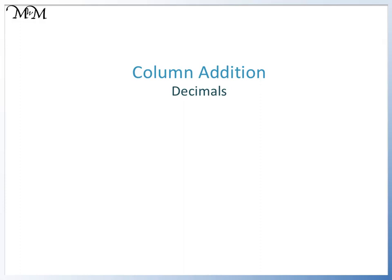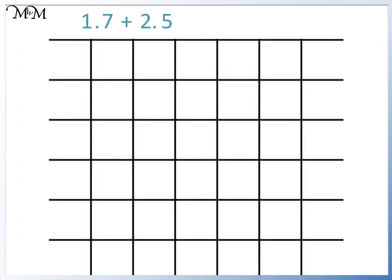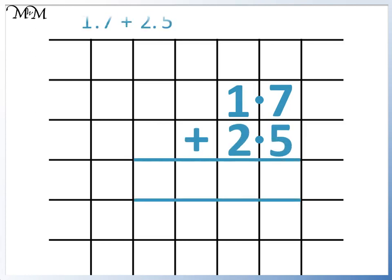Hi and welcome to our lesson on the column addition of decimals. Here we have 1.7 plus 2.5. We begin by lining up the digits in their place value columns. The easiest way to do this is to start by lining up the decimal points. We must also make sure to write a decimal point in our answer. This must line up with the decimal points above.